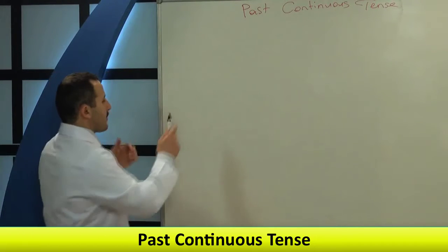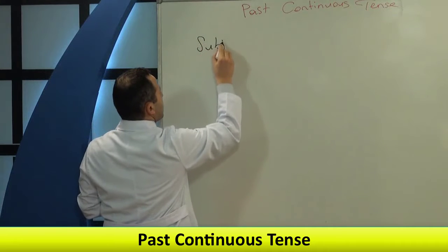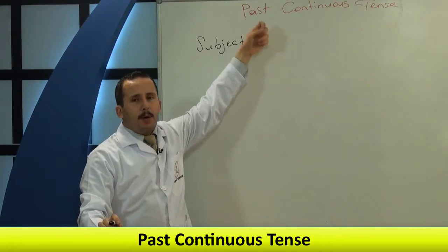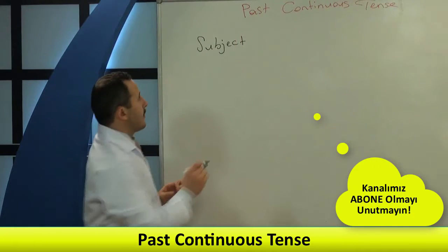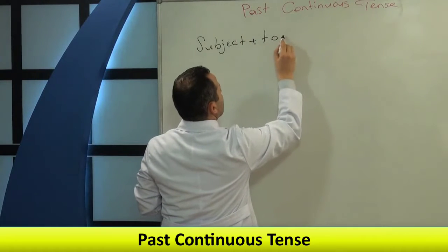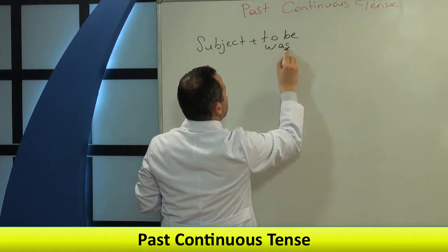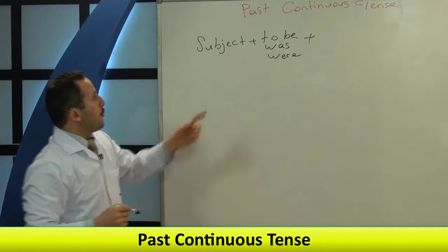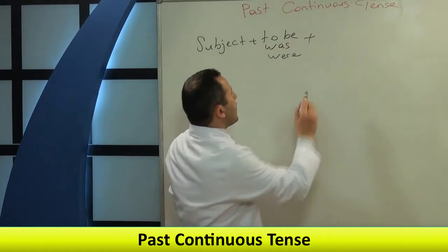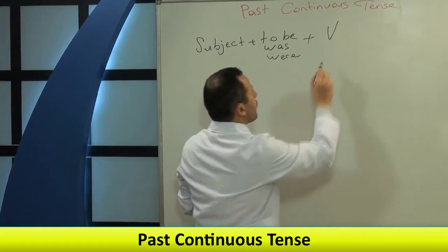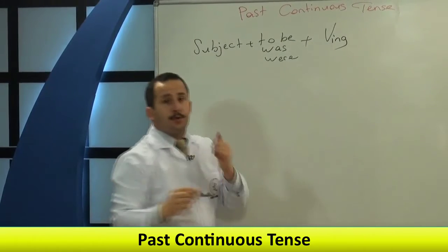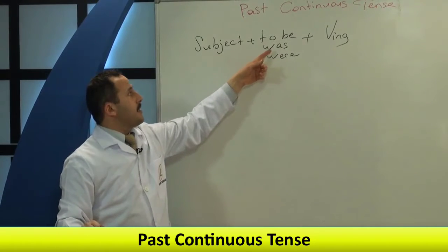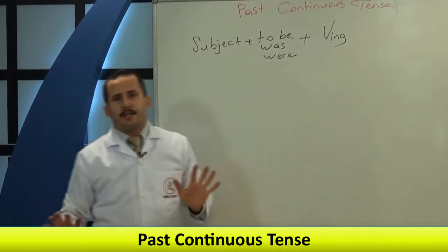Formülümüzü yazalım sonra detayına gireceğiz. Klasik özne ile başlıyoruz. To be fiili kullanacağız, ama to be fiili past tense'de nasıldı? To be'nin past hali: was ve were. Bundan sonra Continuous'un özelliğine geliyoruz — fiile -ing ekliyorduk.